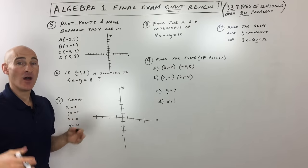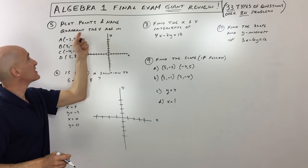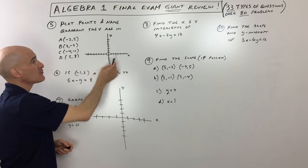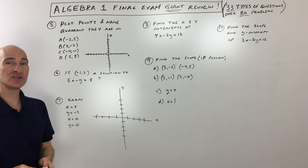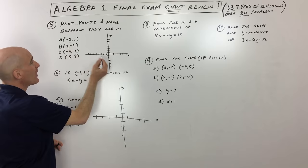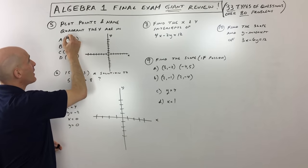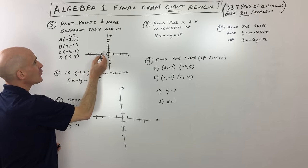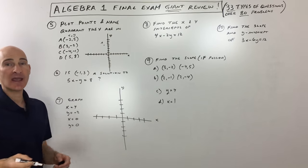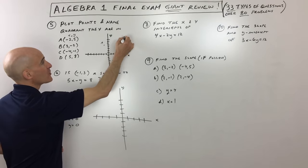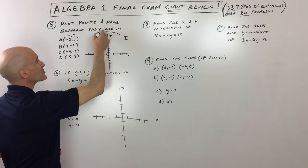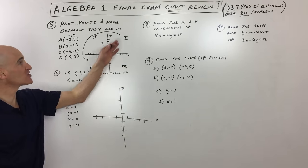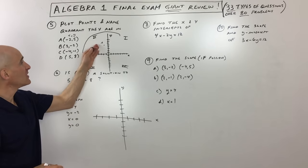Question 5 asks us to plot points and name the quadrant they are in. Point A is negative 2, 5 — go left 2 and up 5 — that's in quadrant 2. Point B is 3, negative 2 — go right 3 and down 2 — that's in quadrant 4. Point C is negative 4, negative 1 — go left 4 and down 1 — that's in quadrant 3. Quadrants start in the upper right and go counterclockwise: 1, 2, 3, 4.